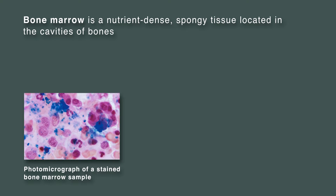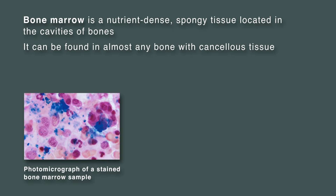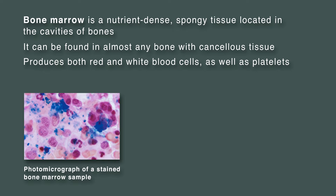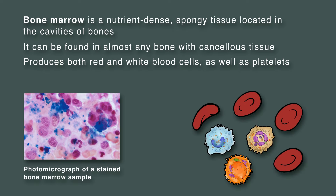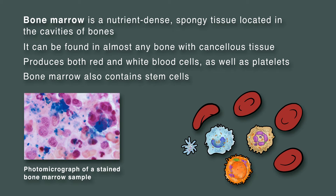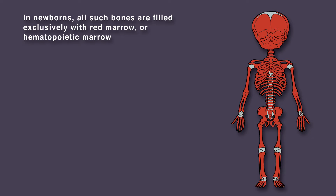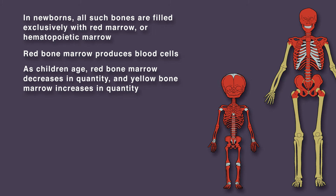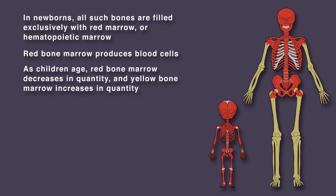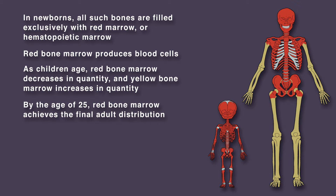Bone marrow is a nutrient-dense, spongy tissue located in the cavities of bones. It can be found in almost any bone with cancellous tissue and produces both red and white blood cells, as well as platelets. In newborns, all such bones are filled exclusively with red marrow, or hematopoietic marrow. As children age, red bone marrow decreases in quantity and yellow bone marrow increases in quantity. By the age of 25, red bone marrow achieves the final adult distribution.